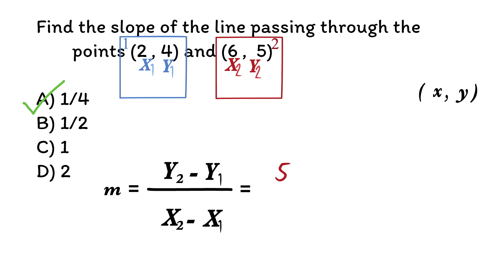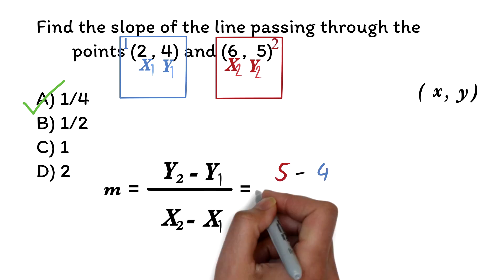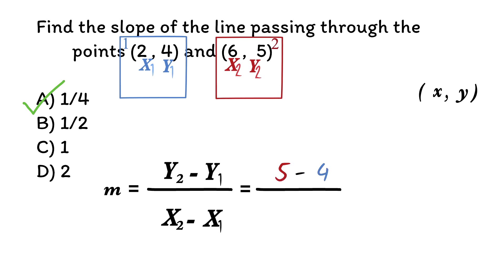We have 5, which is y2, minus 4, which is y1, divided by 6 which is x2, minus 2, which is x1. We simplify. 5 minus 4 is 1, over 6 minus 2, which is 4. So the slope is 1 over 4.